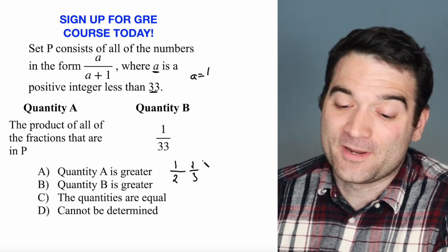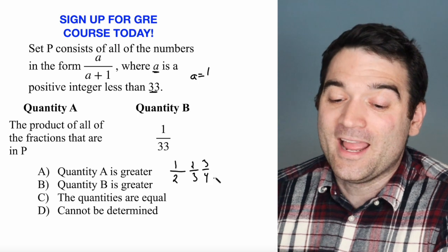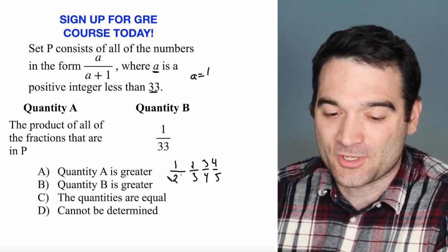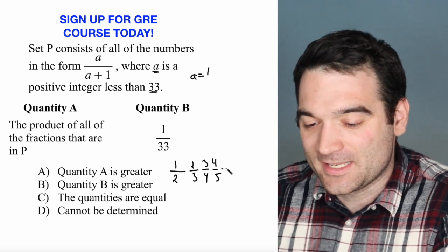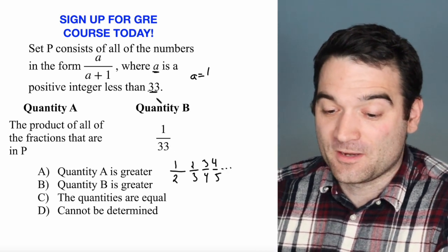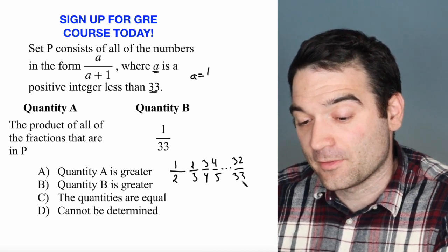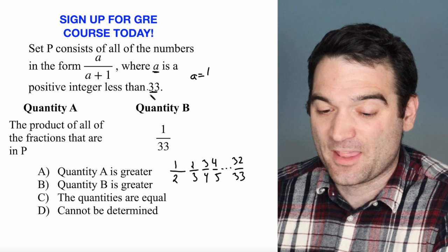And the third term is going to be 3 over 4, and the fourth term is going to be 4 over 5, and on and on. I'm writing these right next to each other. I'm going to say dot, dot, dot, all the way up to the very last term, which is going to be 32 over 33, because it's the number less than 33.